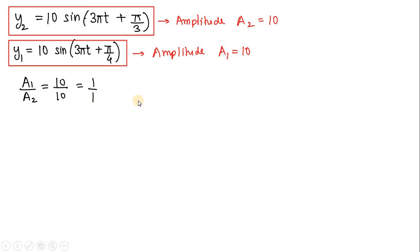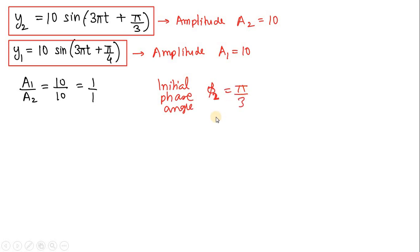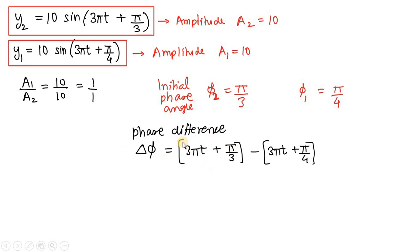The second part of the question asks for the phase difference. The argument of the sine function is the phase angle. For y1, the phase angle is 3πt + π/4, and for y2 it is 3πt + π/3. Subtracting the two: the 3πt terms cancel, and π/3 − π/4 = π/12. So the phase difference between the two SHMs is π/12.